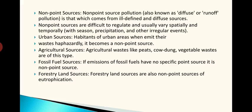Coming to the other type of sources — non-point sources. We cannot exactly identify from where these are originating. Non-point sources of pollution, also known as diffuse or runoff pollution, come from ill-defined diffuse sources. We cannot exactly define from where it is coming; for example, if we are using fertilizers for cultivation, the fertilizer waste comes as a dissolved component along with water runoff along with rain from many agricultural fields. Non-point sources are difficult to regulate and usually vary spatially and temporally with season, precipitation and other irregular events.